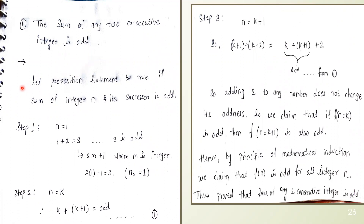Whenever we have to prove this statement, we assume the given statement is true for certain conditions — that the sum of two consecutive integers is odd. Step number 1 is the base step. We consider the initial value n equal to 1 and its consecutive integer 2. So 1 plus 2 equals 3, and 3 is an odd number. We can represent 3 as 2m plus 1, where m is any integer. For example, if m equals 1, then 2 times 1 plus 1 equals 3.